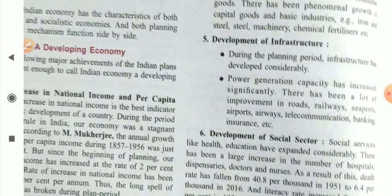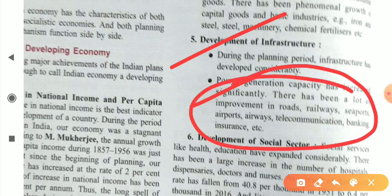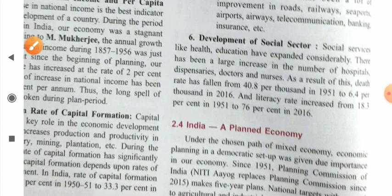The next point is development of infrastructure. During the planning period, infrastructure has developed considerably. Power generation capacity has increased significantly. There has been a lot of improvement in roads, railways, seaports, airports, airways, telecommunication, banking, and insurance. All these sectors grew after the post-independence period. Before independence, such facilities were either absent or available only to the British, so infrastructure development is also an indicator of a developing nation.